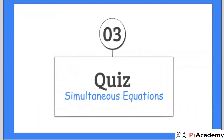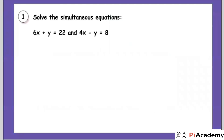Be ready with your pen and paper — you are going to get the time and solve some questions. First question: 6x plus y equals 22, and the next equation is 4x minus y equals 8. Continue this question, you have two minutes.